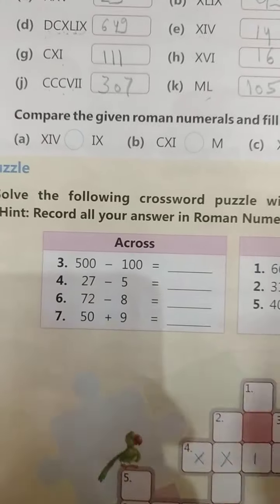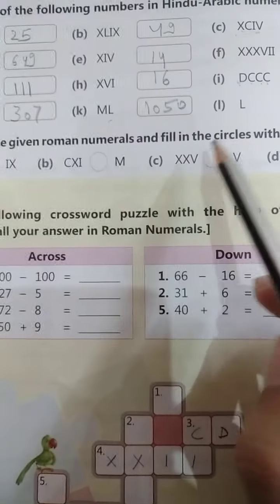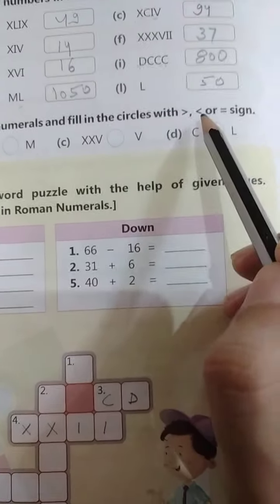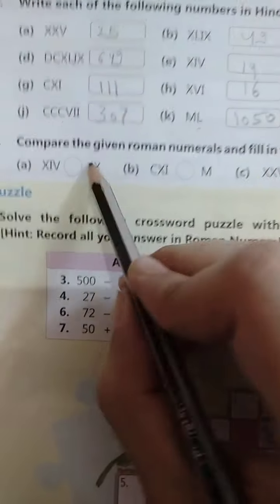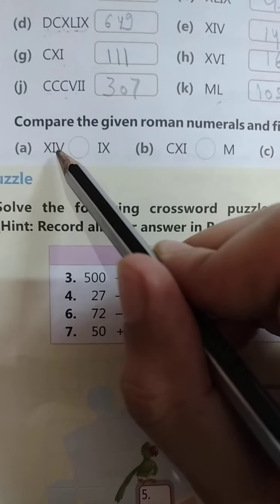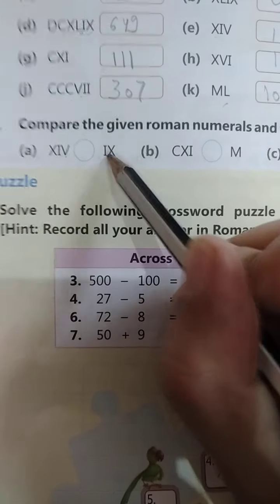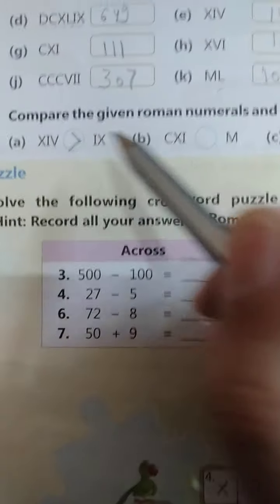Next question: compare the given Roman numerals and fill in the circle with greater than or less than or equal to sign. This means 10 and 4, 14, and 9. So what is this? 14 is greater than 9.